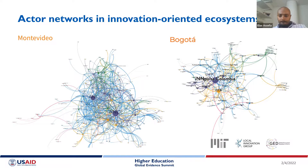We translated that definition into a visual framework. At the center, we see the purpose — what actors are trying to do through their interactions. Their interactions are symbolized by an interconnecting star. Actors are identified both by actor type in the circle — businesses, networks, government, the triple or quadruple helix — and importantly by the role they're playing in the ecosystem, such as connecting, sharing knowledge, or providing funding, which can be done by different actor types.